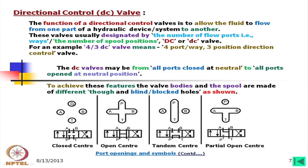Ports A and B are the actuator ports; P is the pressure port and T is the drain (tank) port. P means pressure port — it may come from a single pump or from a system. All ports are independent at the neutral position. When we move to the right-hand side, connections are one configuration; when we move to the left-hand side, connections are another. If we move the spool leftward, the connection is P to A and B to T. If we move rightward, then P to B and A to T.